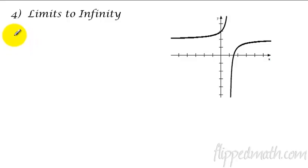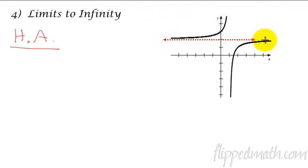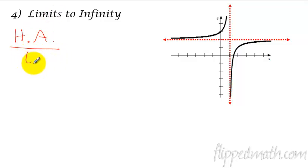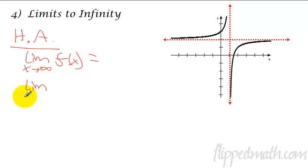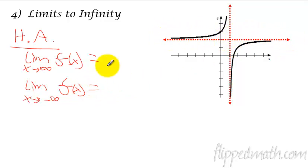Limits to infinity. If I'm looking for horizontal asymptotes, the notation is: the limit as x approaches infinity of f of x — that's talking about the right side. And then you have to talk about the left side by saying x is approaching negative infinity of f of x. In this case the value is 2, so it equals 2. You have to state both the right side and the left side to get full credit, because you can't just talk about one side.